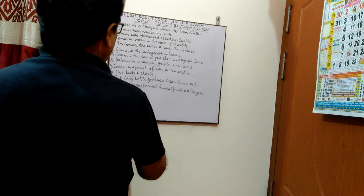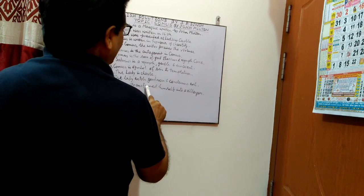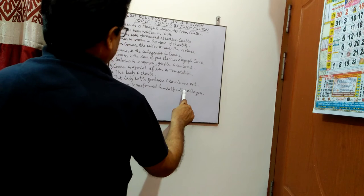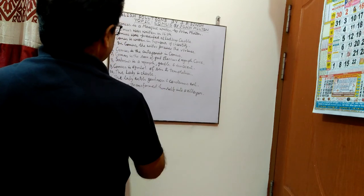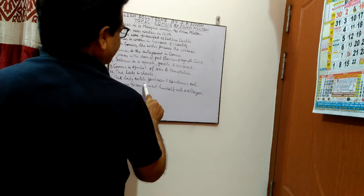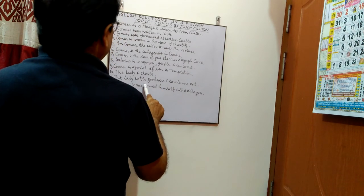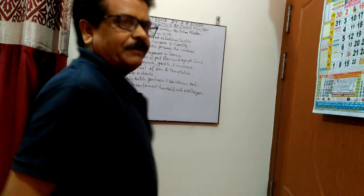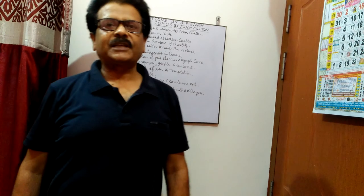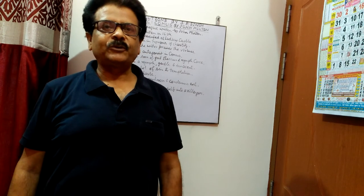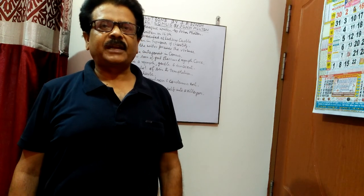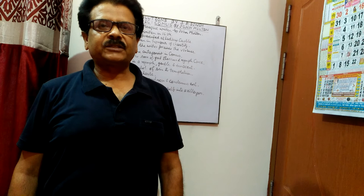One more point: Comus transformed himself into a villager to deceive the Lady. So 12 important points are covered for your use. Please like, share and subscribe. English Solutions.